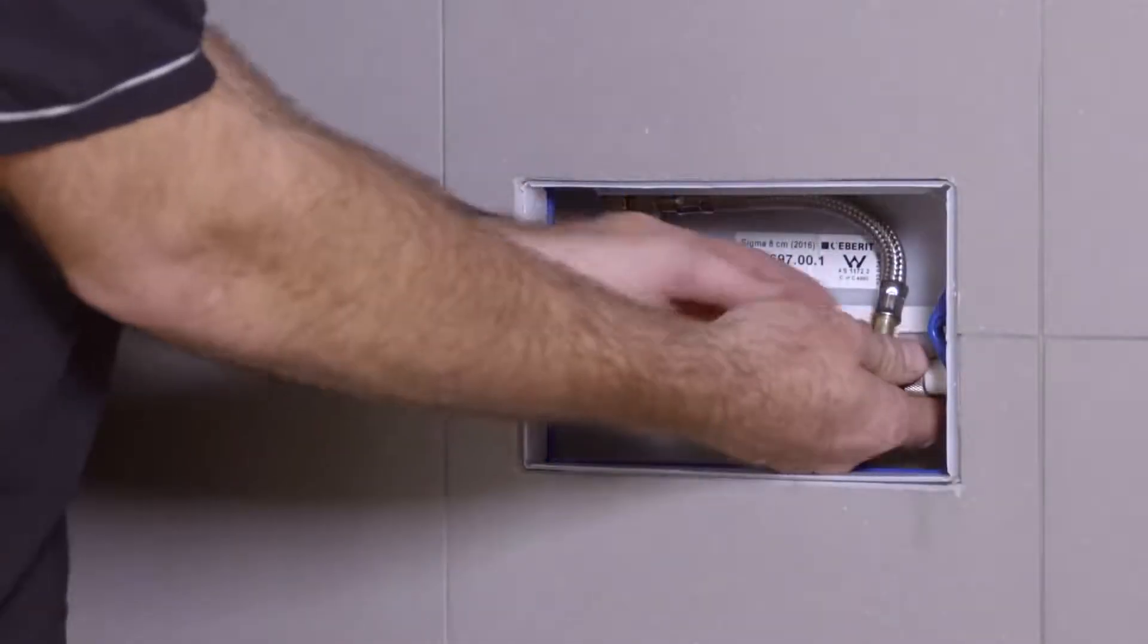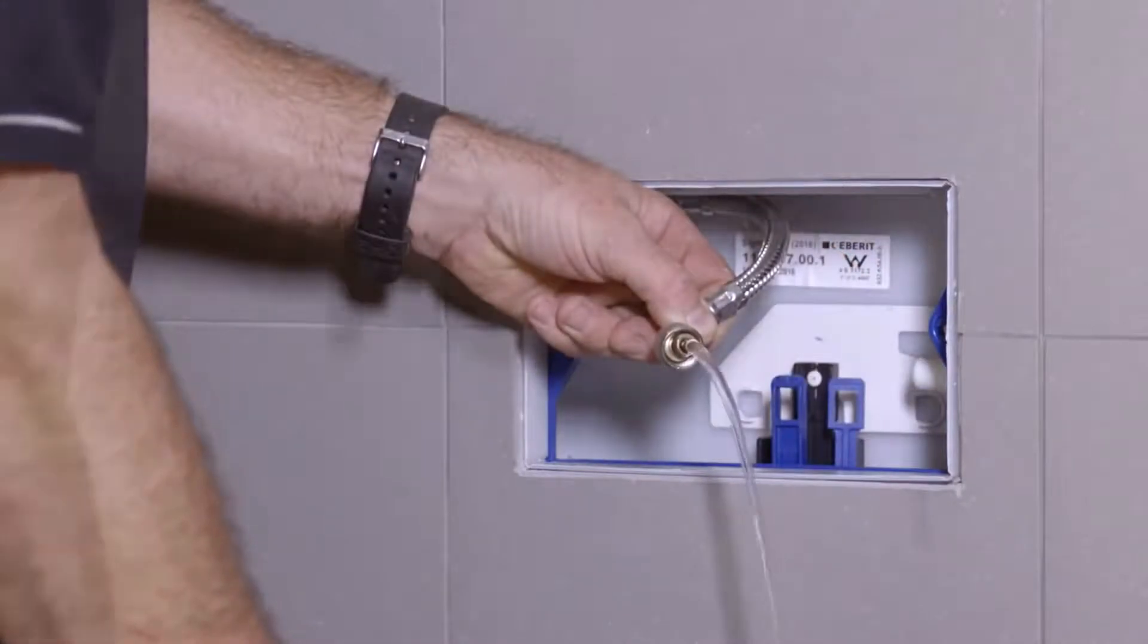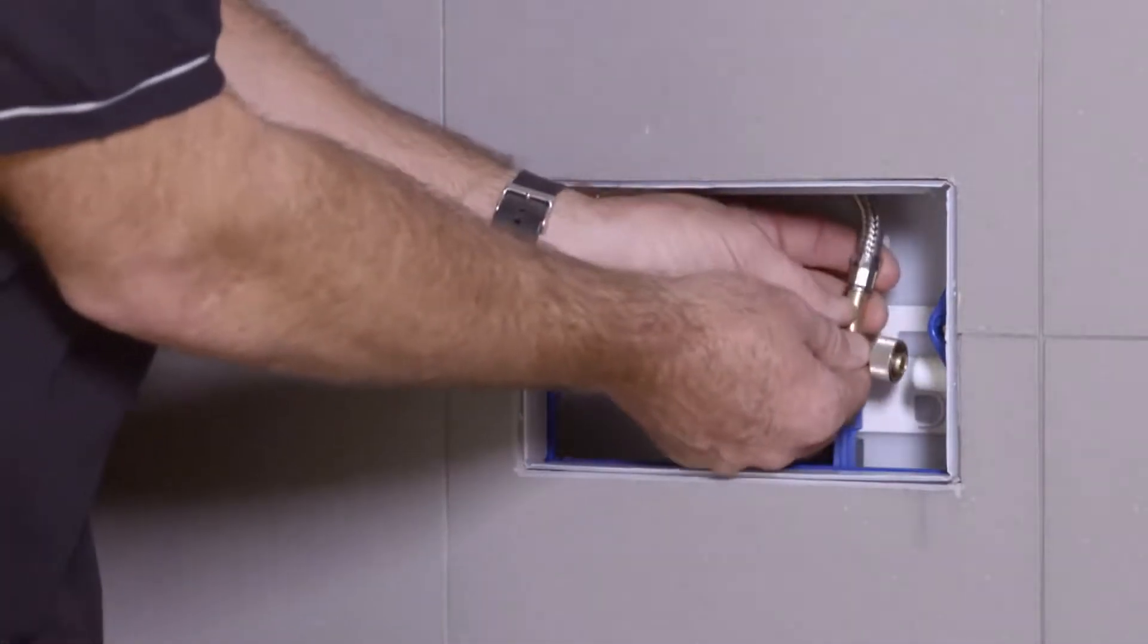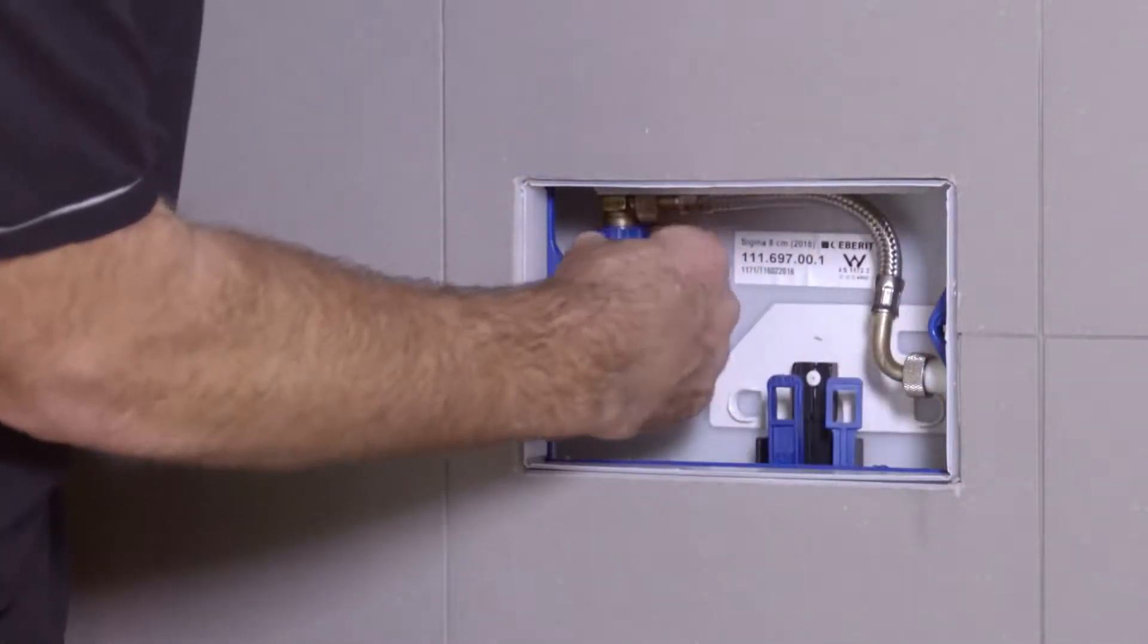The flexible hose can be detached from the inlet valve to flush the water supply and remove any debris. Once the line is clear, refit the hose. Turn on the water supply and check the water level.